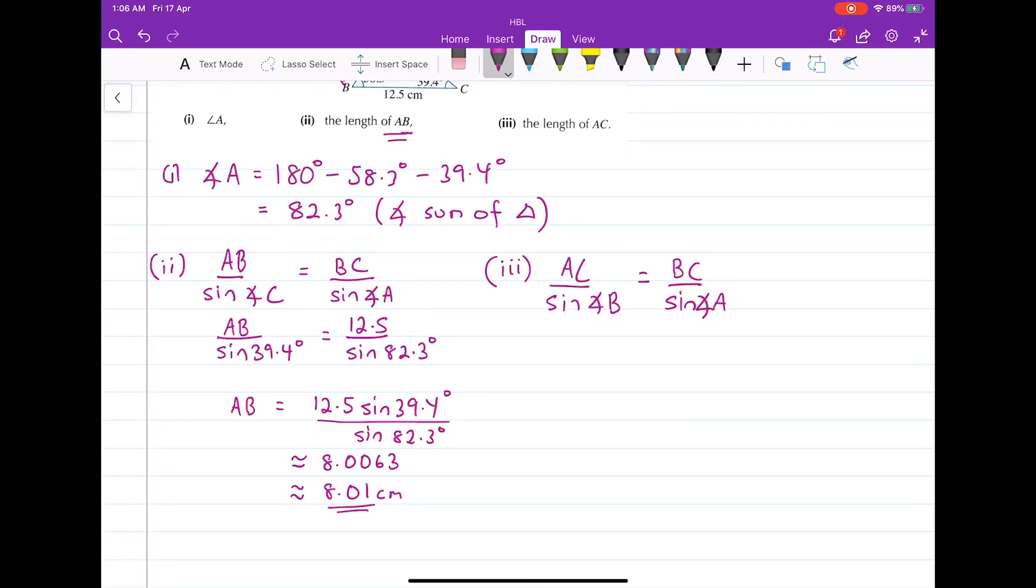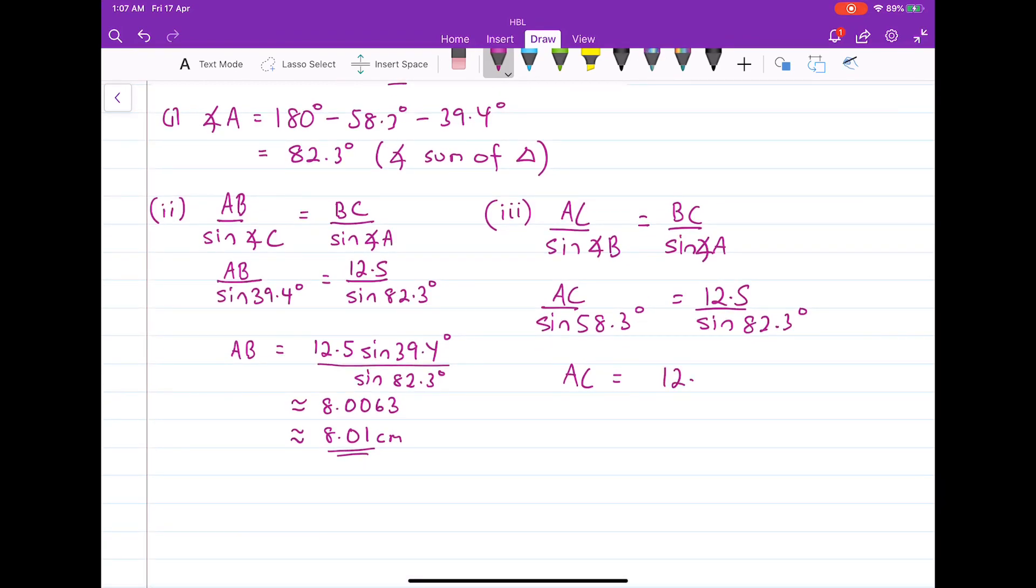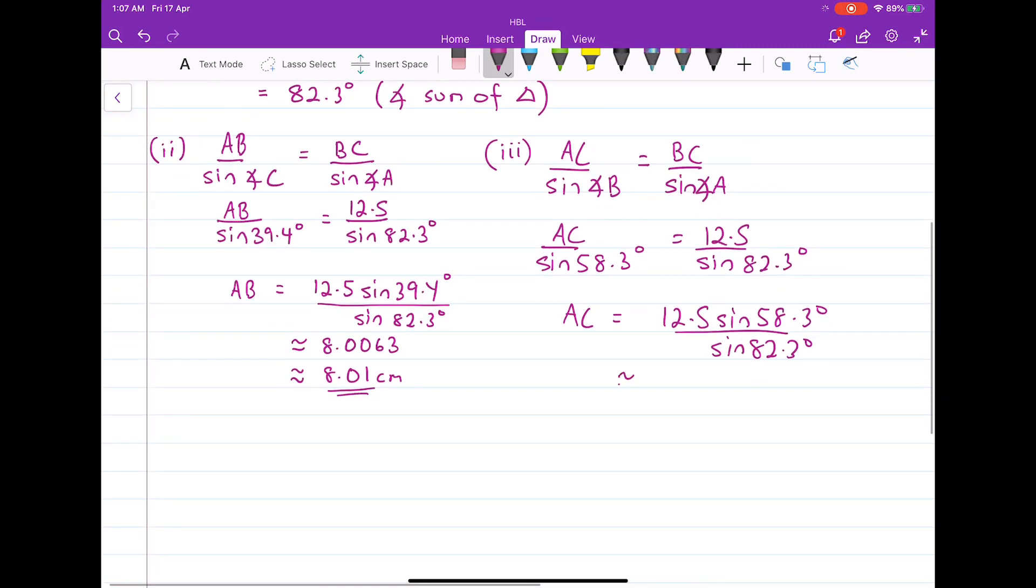So let's do the substitution. In this case here, AC over sine 58.3 degrees equals BC which is 12.5 again over sine 82.3 degrees. And then again, let's move things around using algebra. AC equals 12.5 sine 58.3 degrees over sine 82.3 degrees. And you get a length of approximately 10.732 which is about the same as 10.7 cm rounded off to 3SF. Okay. And they'll be your answers.